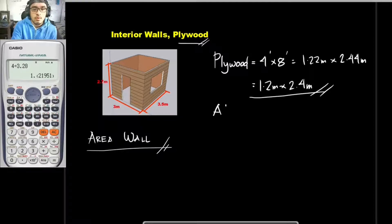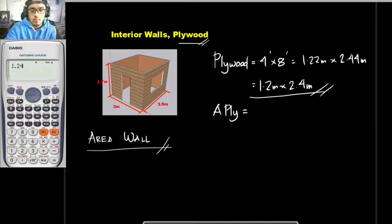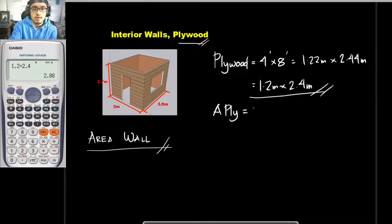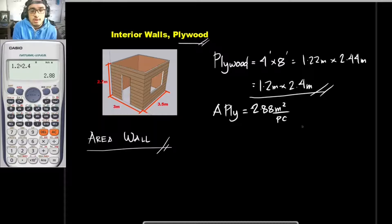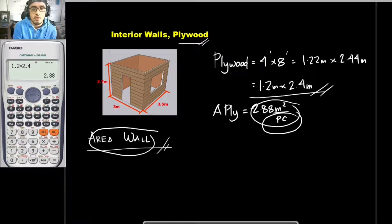The area of one plywood — 8-ply — is equal to 1.2 by 2.4, which is 2.88 square meters per piece. So if you can see where this is going, we must divide the area of the wall by this to get the number of pieces.